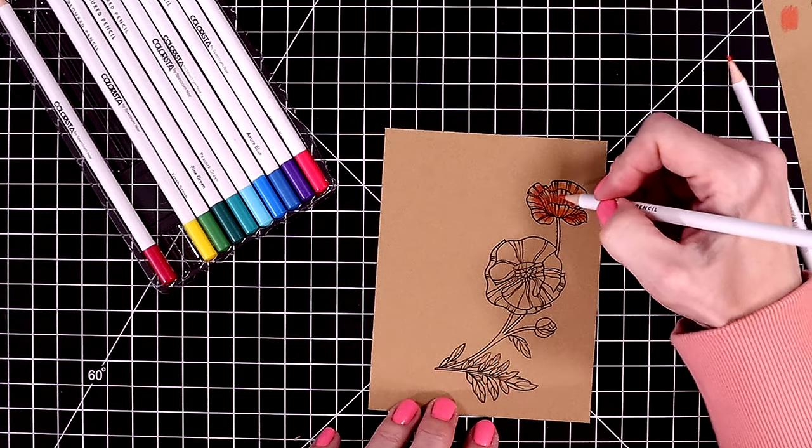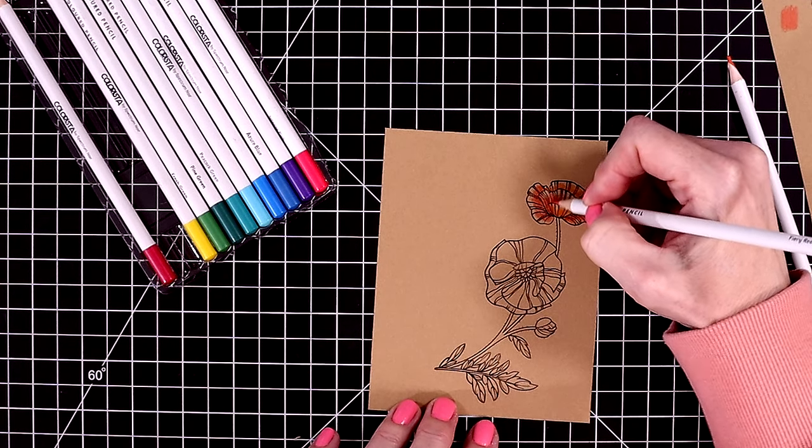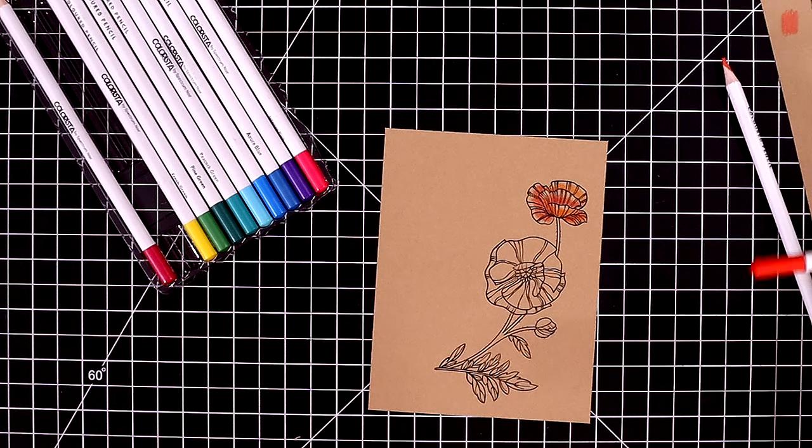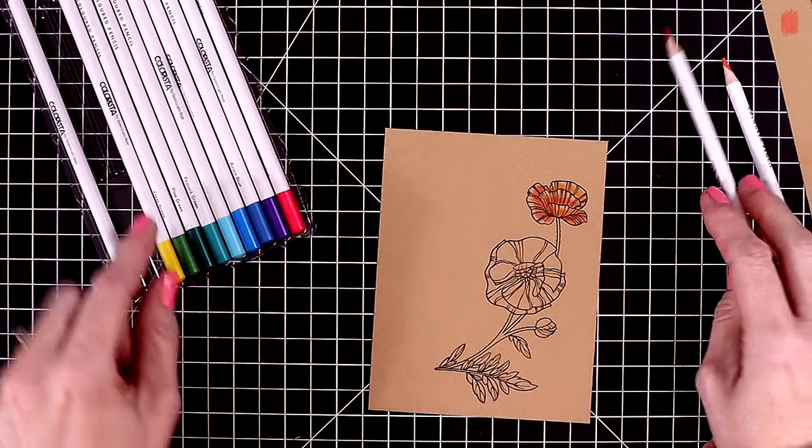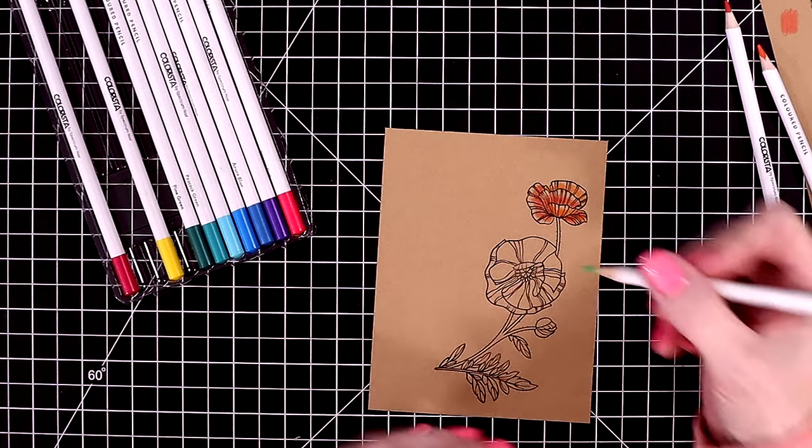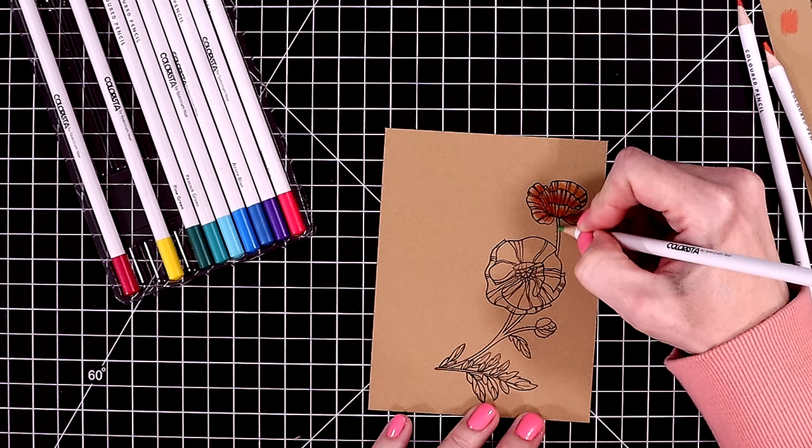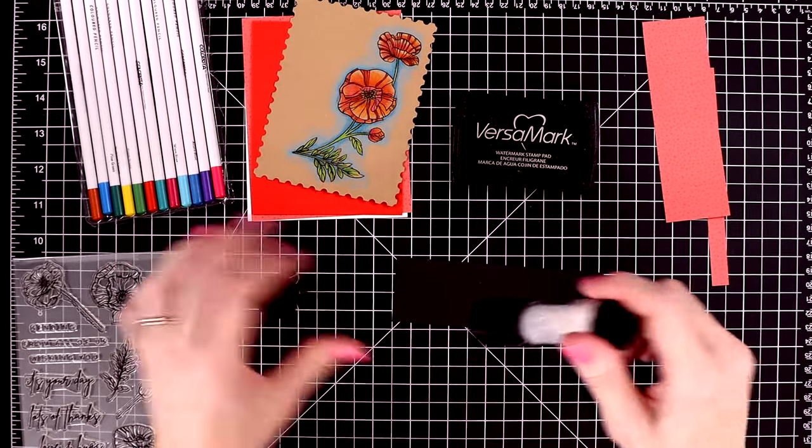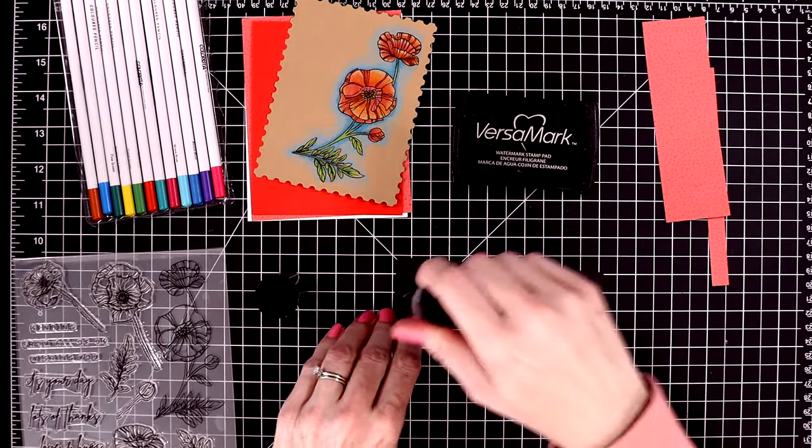And then after I finish my coloring, I'm going to bring in the light blue and the dark blue and just go around the flowers. This will make them pop a little bit more and highlight them. It's a fun technique to do.